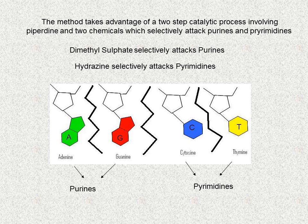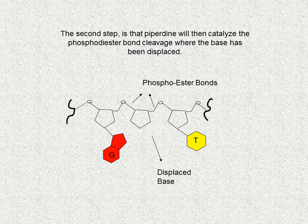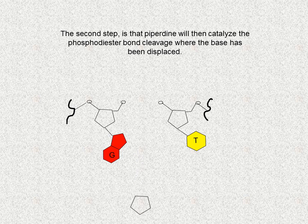This method takes advantage of a two-step catalytic process involving piperidine and two chemicals which selectively attack purines and pyrimidines. The chemical dimethyl sulfate selectively attacks purines, namely adenine and guanine, and the chemical hydrazine selectively attacks pyrimidines, namely cytosine and thymine. The first step is that purines react with dimethyl sulfate or pyrimidines react with hydrazine, in such a way as to break the glycosidic bond between the ribose sugar and the base. The second step is that piperidine then catalyses the phosphodiester bond cleavage where the base is being displaced.